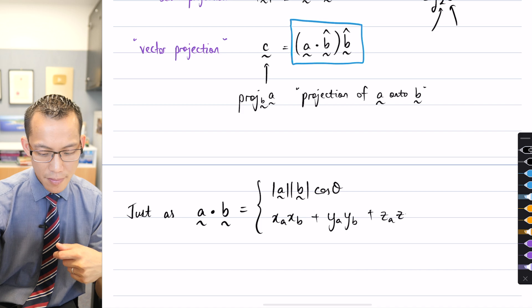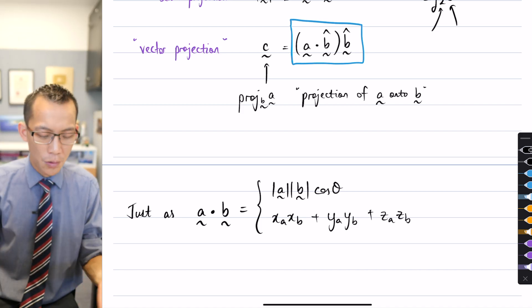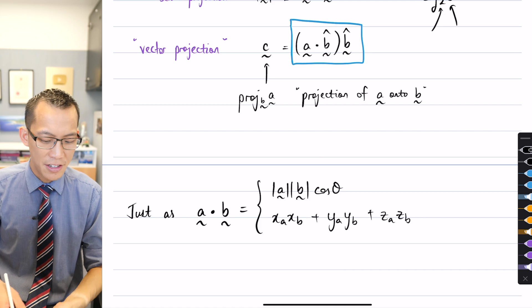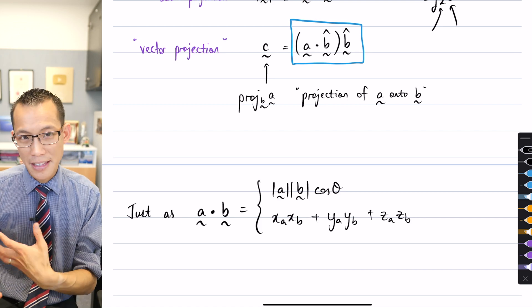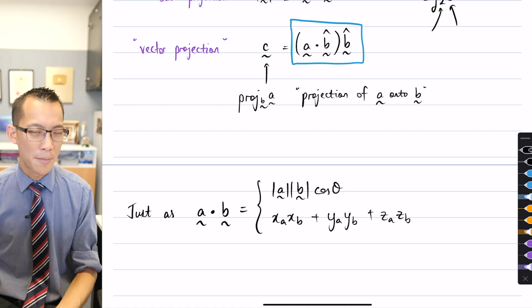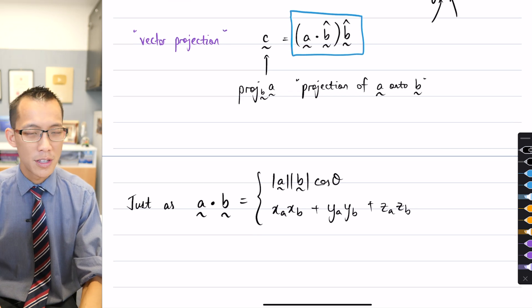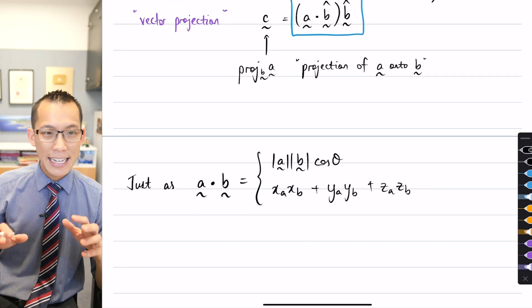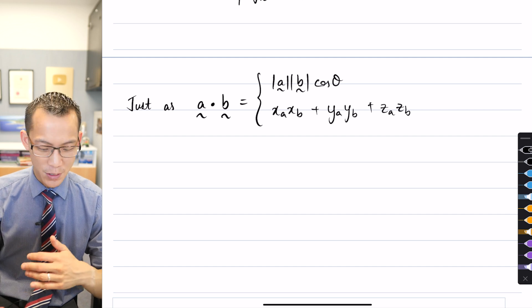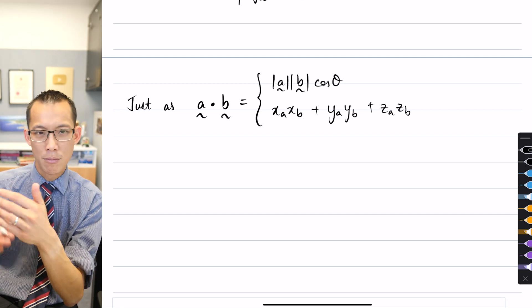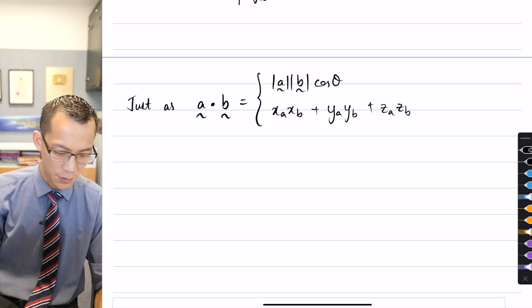Now, of course, what you can do is if you have all the components, you can work out the magnitude and then you can also work out the angle. But if you just have the components and you just want to go straight to the dot product, we'd use the second one. Now in exactly the same way, there are multiple formulas for the projection. It just depends on what information you've got.